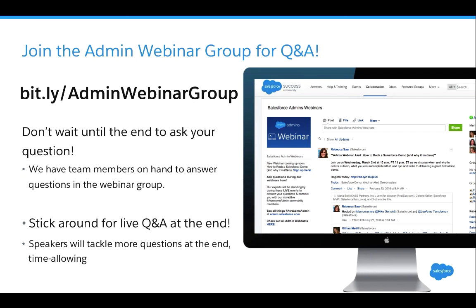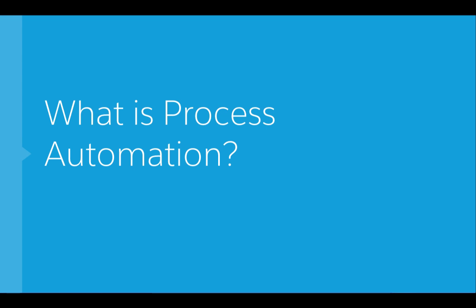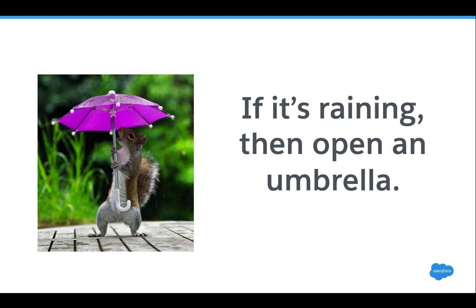With all the legal and social stuff out of the way, Melissa, why don't you take us through the agenda? We have a really jam-packed agenda today — we're going to talk all about process automation, write some formulas, have a demo with Mike, and then go over resources and Q&A. A great way to think about process automation is as an if-then statement. For example, if it's raining, then open an umbrella.